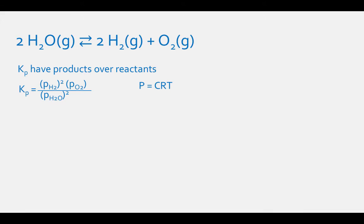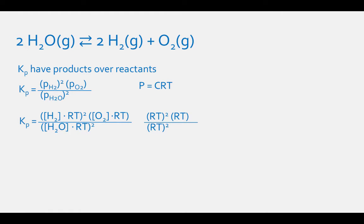Substitute the equation pressure equals concentration times RT. Kp then equals the concentration of H2 times RT, squared, times the concentration of O2 times RT, divided by the concentration of H2O times RT, squared. Moving and canceling the RT terms gives RT squared times RT divided by RT squared, which equals RT. So the final equation is Kc times RT, where the concentration terms form the Kc expression.